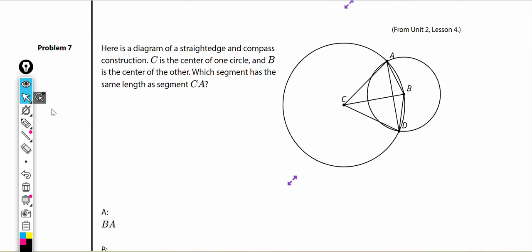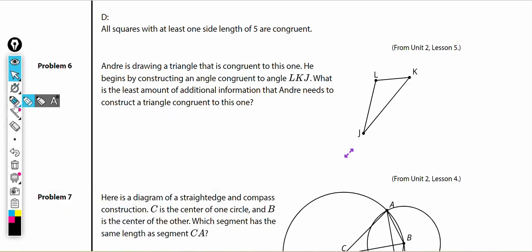Problem number 6. Andre is drawing a triangle that is congruent to this one. He begins by constructing angle LKJ. What is the least amount of additional information that Andre needs to construct a triangle congruent to this one? He has constructed LKJ. We have an angle. So we're going to need either a side or another angle. He would need to know what this angle is. That's one piece of information. And then finally, he would need to know a side. If he knew this angle, that's an angle, and if he knew this side, that's a side, he would have enough for angle-angle-side. And that's it.